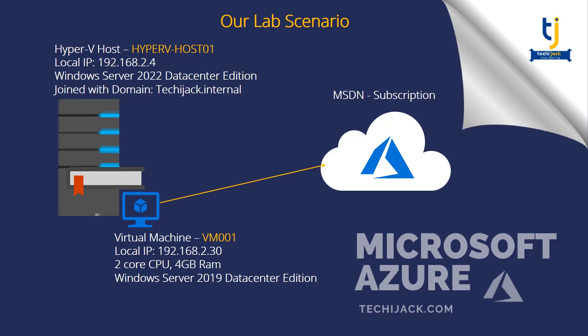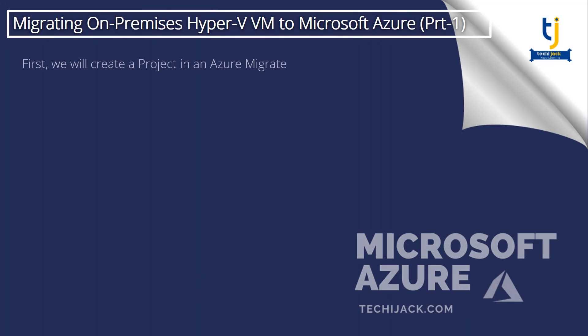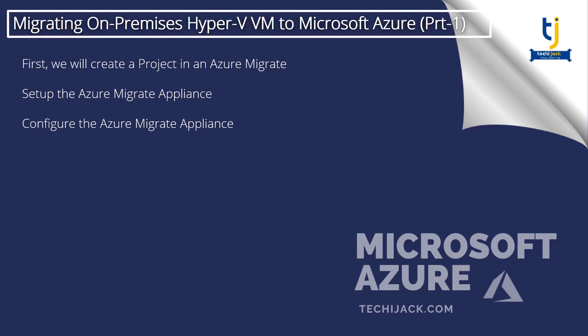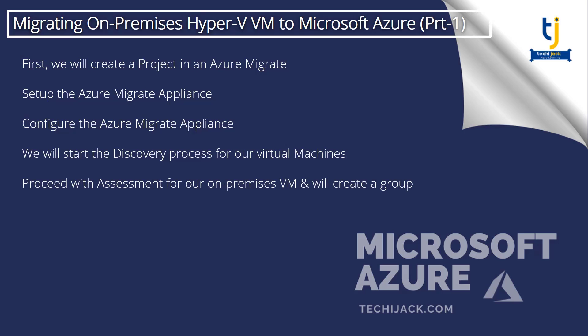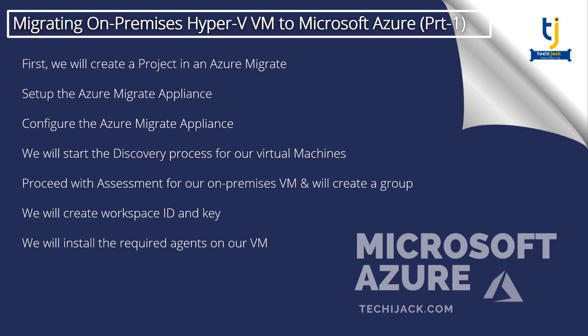This course has two parts. In the first part, we will create a project in Azure Migrate and then set up the Azure Migrate appliance. After that, we will configure the Azure Migrate appliance and start the discovery process for our virtual machine. Then we will proceed with the assessment for our on-premises VM, create a group, create a workspace ID and key, and install the required agents on our virtual machine.